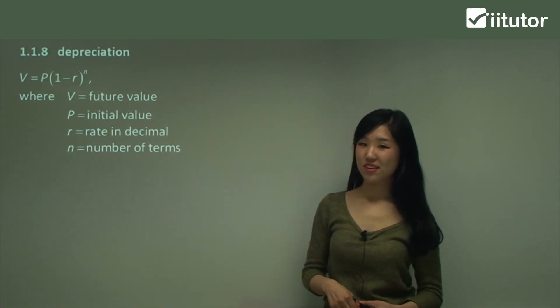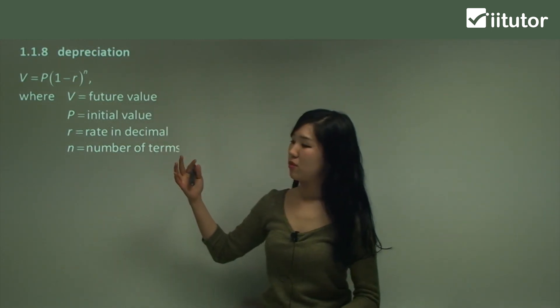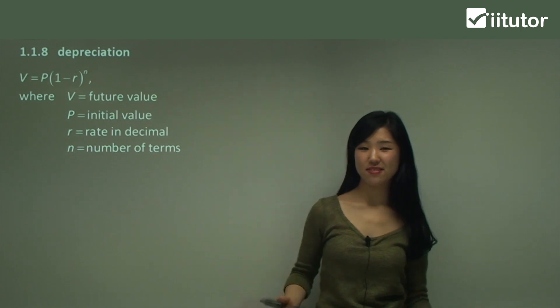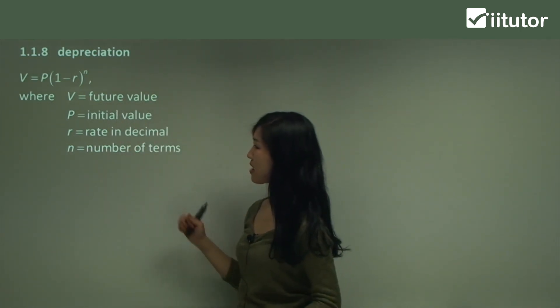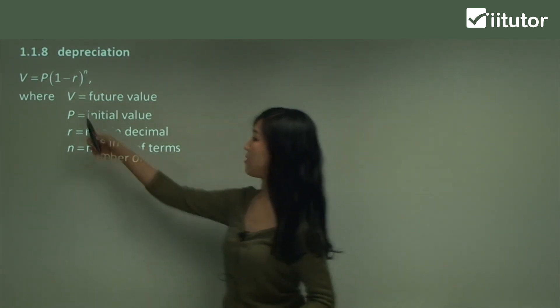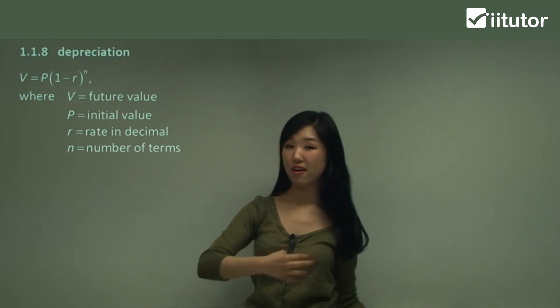Now let's look at depreciation. It's the opposite of appreciation. Depreciation is when the value of something becomes less and less over time, like second-hand items. So this is the formula: v equals p times 1 minus r to the power of n. The only difference is that the sign is negative as it's going down over time.